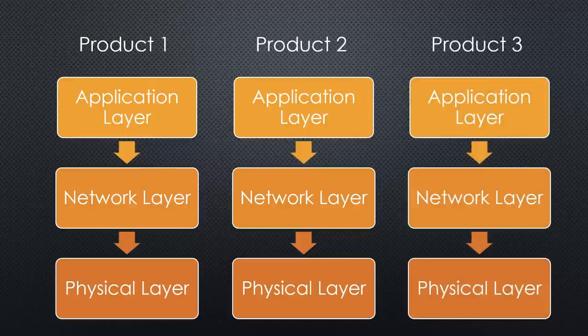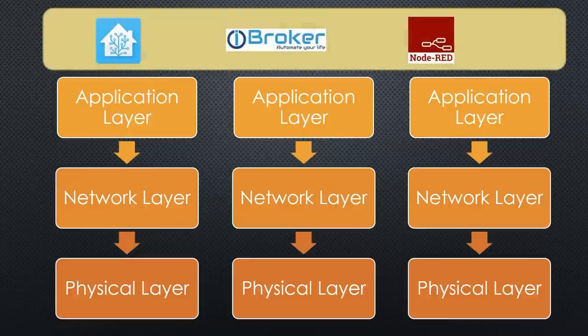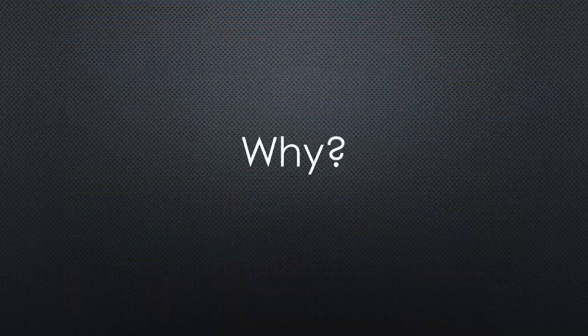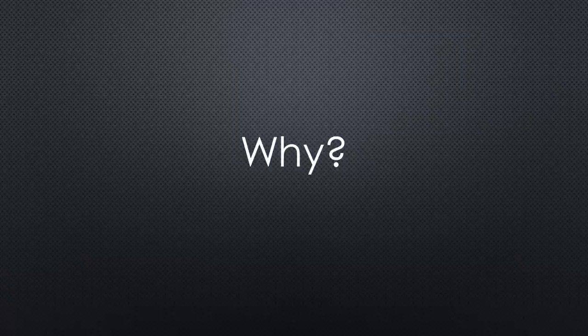Nothing is compatible and nothing works together. We must use a secret trick to solve the problem — only we smart guys know it and can use applications like Home Assistant or IO Broker. These applications can interact with all the various products around our homes and integrate them into one system, sometimes supported by manufacturers, sometimes hacked by brilliant people. The rest of humanity has to decide on one ecosystem of the big manufacturers and are then trapped for the foreseeable future.